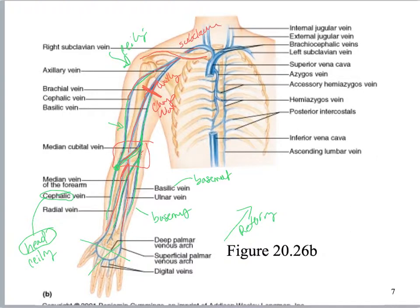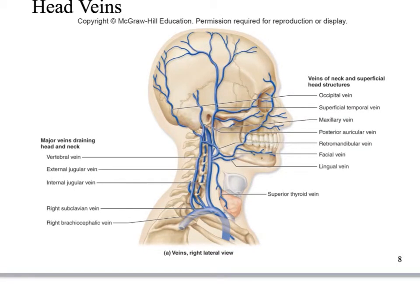The subclavian is going to drain into the brachiocephalic vein. All of this is symmetrical, so you don't need right or left. Also emptying into the subclavian, you have the internal jugular and the external jugular. On the next slide, we're going to blow that up.